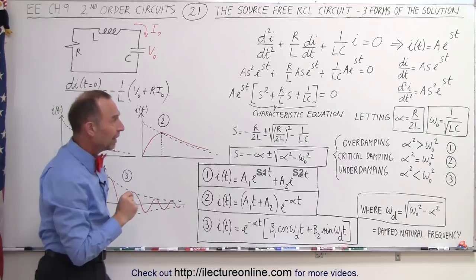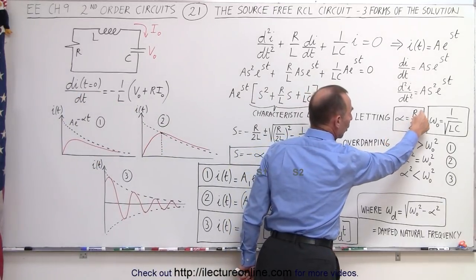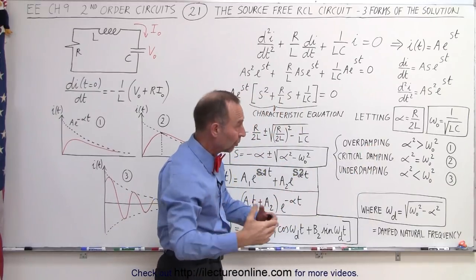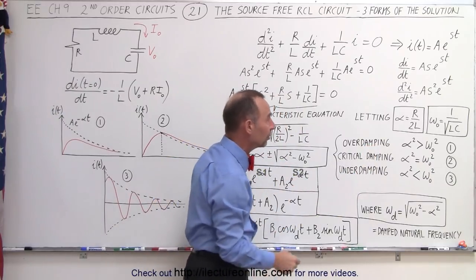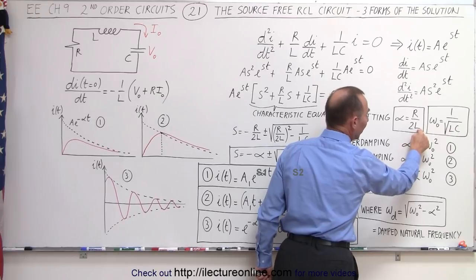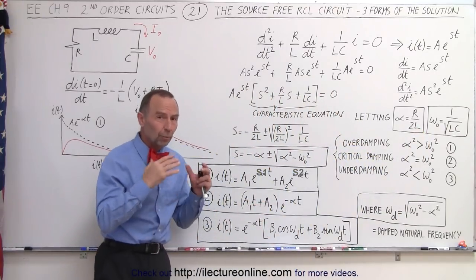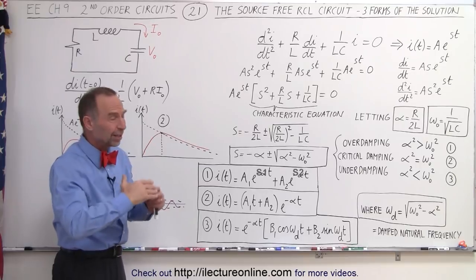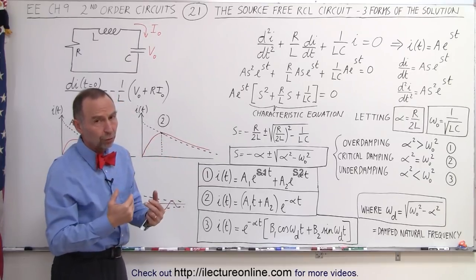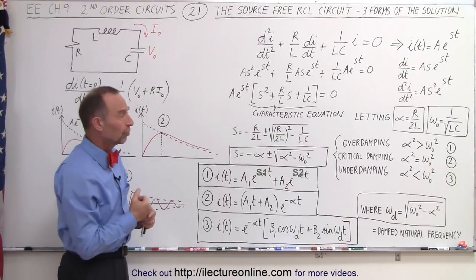Notice that the damping factor is larger when R is larger, which makes sense — the bigger the resistor, the greater the damping of the circuit. It's inversely proportional to the inductance because the bigger the inductance, the more it resists the change in current, tending to keep the current smaller. A smaller current tends to mean less energy lost through the resistor.